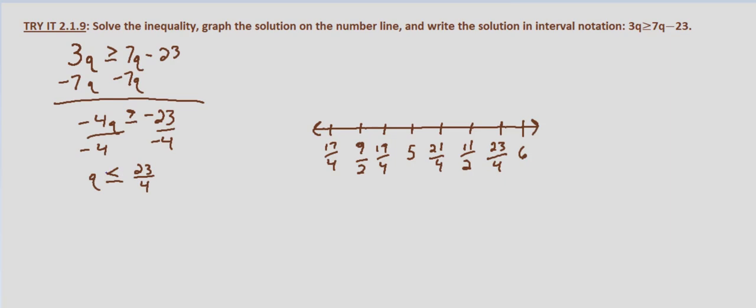So this inequality is inclusive. It includes an equal sign so we can use a bracket or a closed circle. I'm going to go ahead and use a closed circle. And it's less than or equal to so we're going to the left.